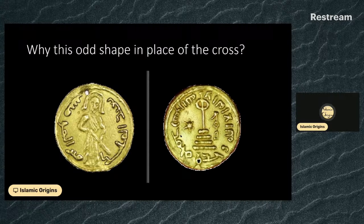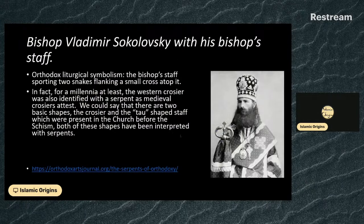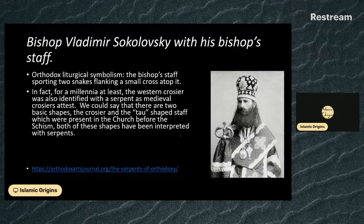Moving on, we still have the issue of this coin under Abd al-Malik. What we see here is not really what we would normally term a cross, but a strange pole with a kind of circle cutting through it. One suggestion is that it follows a tradition found nowadays in the Orthodox Church — the bishop's staff sporting two snakes flanking a small cross atop it.